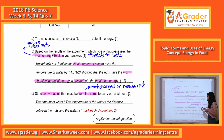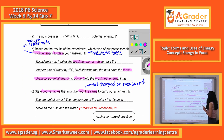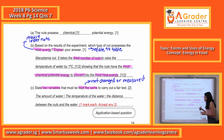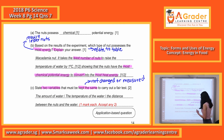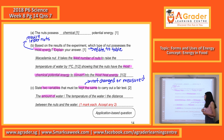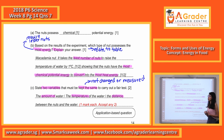Just mention any 2 of these variables. Please be precise — do not just say 'water'; say 'volume of water' or 'amount of water.' Temperature of water is acceptable, and distance between the nut and the water is acceptable as well. Write any 2 of these for the correct answer.